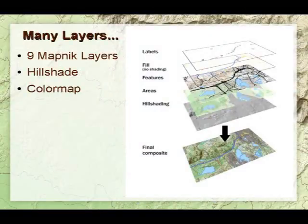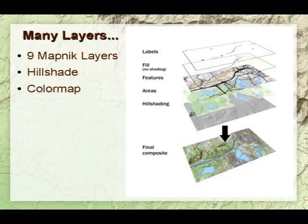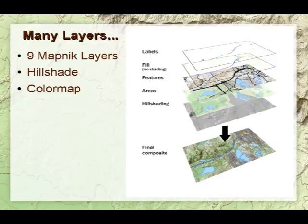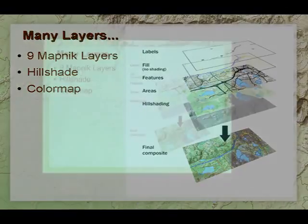Then it's rendering time, and this is where it gets complicated. The normal Mapnik layer renders one tile per tile. I render nine Mapnik tiles per each final tile, plus the hill shading, the color map, and all of that. Then I do some extra processing to put it all together. This illustration from the wiki — it's the first version and not quite up to date — gives you an idea of what the layers are. It's actually a little more complicated than this, and there are good reasons why I do all these layers — it's not just overkill.